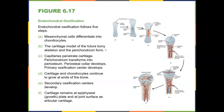In endochondral ossification: mesenchymal cells differentiate into chondrocytes; the cartilage model and perichondrium form; capillaries penetrate the cartilage, the perichondrium becomes periosteum, and primary ossification centers develop; the cartilage and chondrocytes continue to grow at the ends; then secondary ossification centers develop, and cartilage remains at the epiphyseal growth plate and articular surfaces.